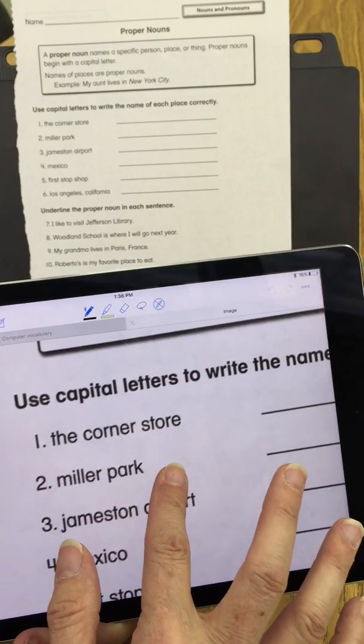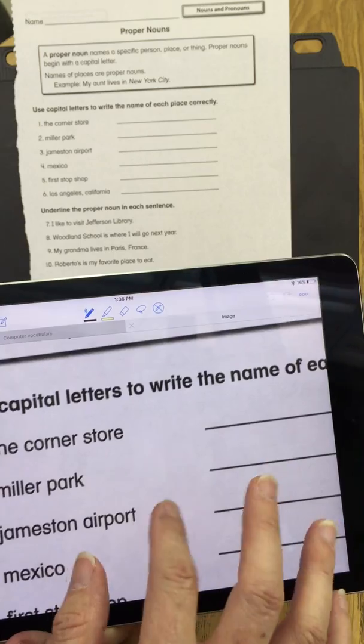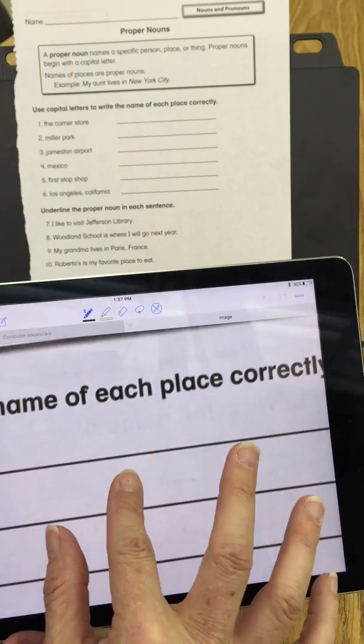And now I need to complete some of the exercises. Use capital letters to write the name of each place correctly. So number one is the corner store, so I need to fill in the corner store on the line.